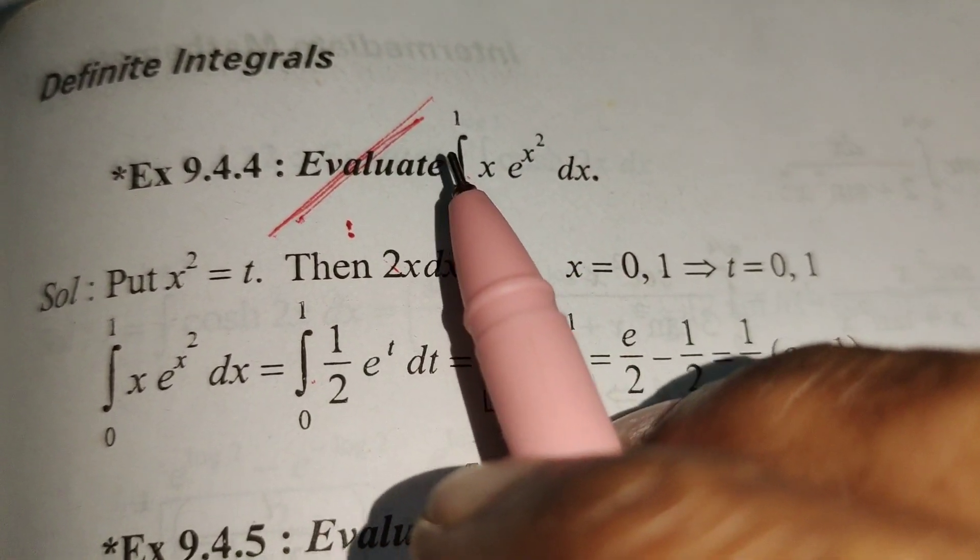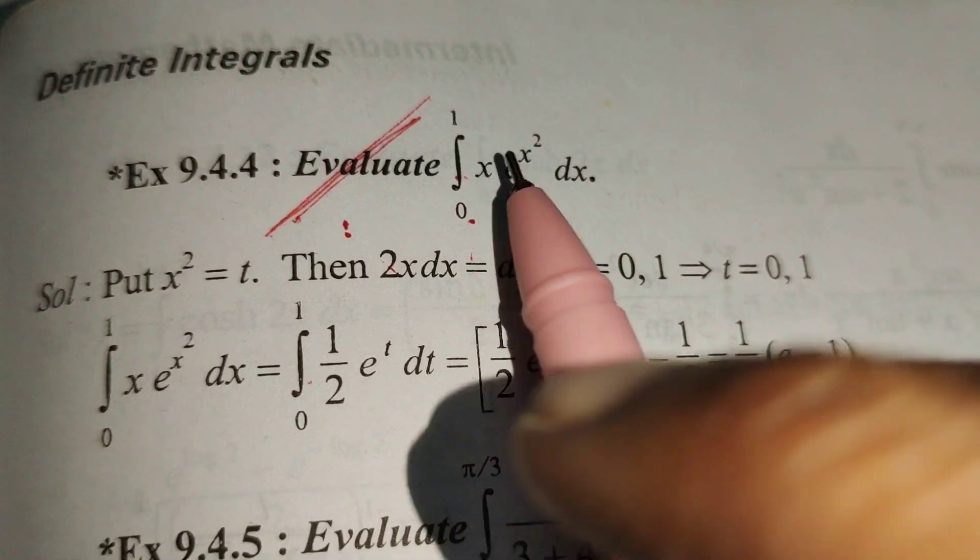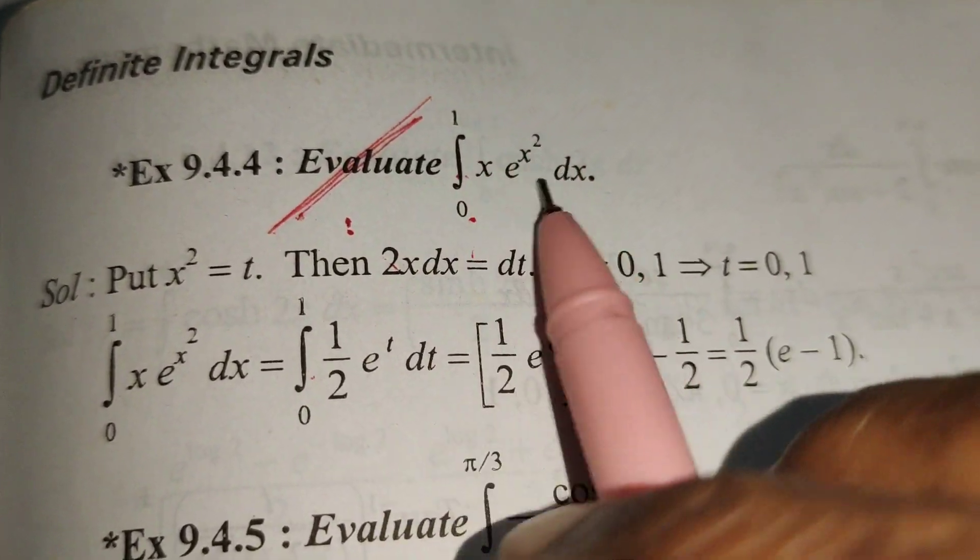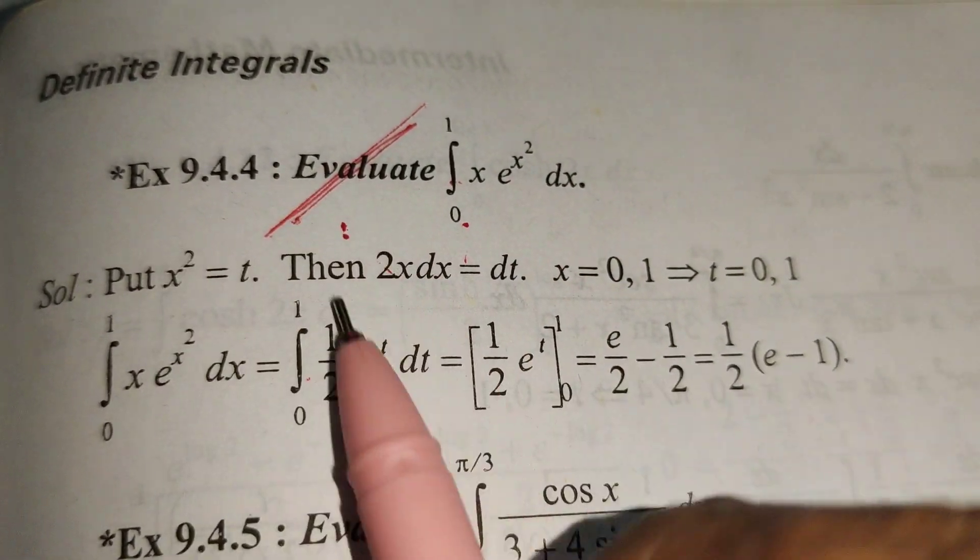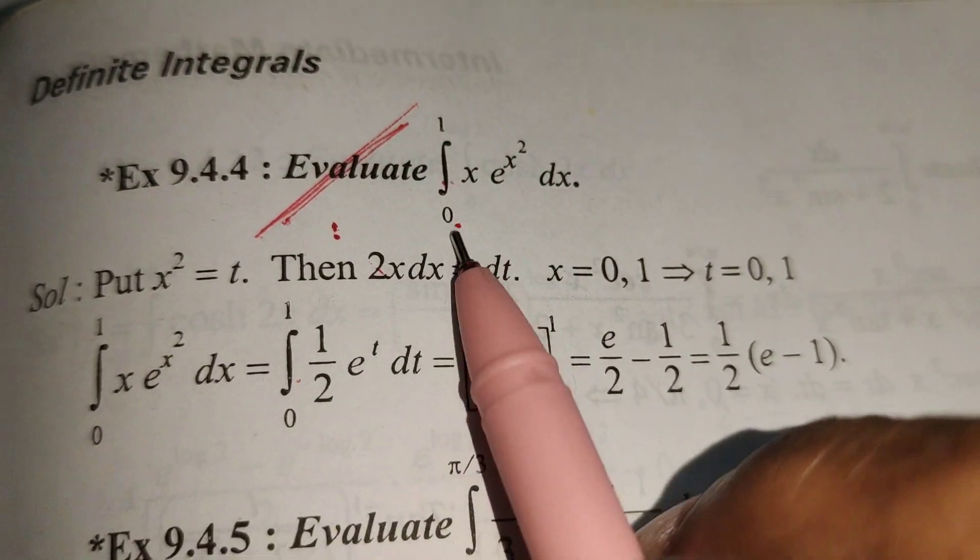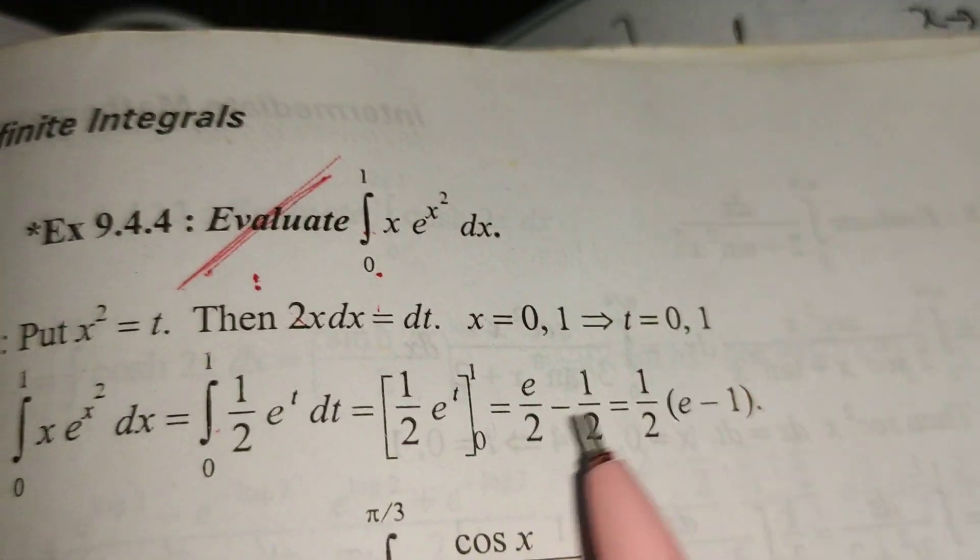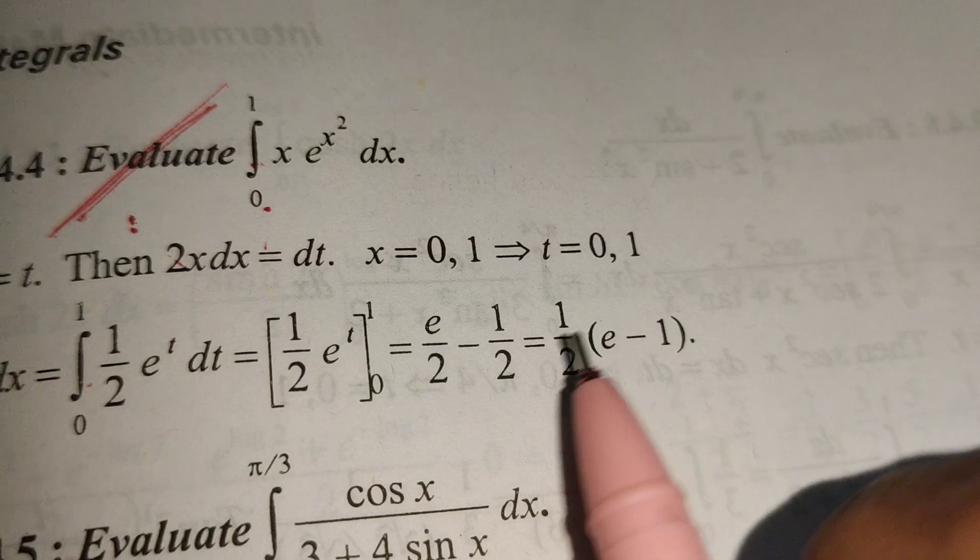Now we solve by rewriting the given integral as a function in terms of t.